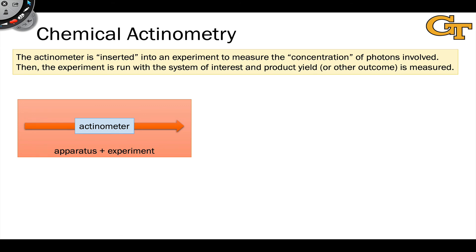Here, potassium ferioxalate is all we need to put in. So we insert our actinometer into the apparatus, whatever experiment we're running, and we find out from the actinometer, we measure precisely the iron 2+ yield.